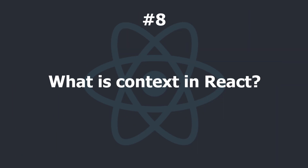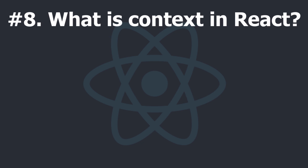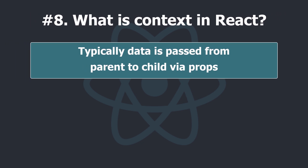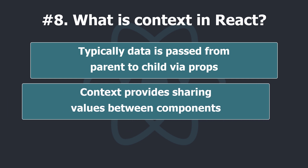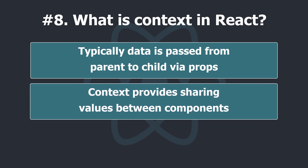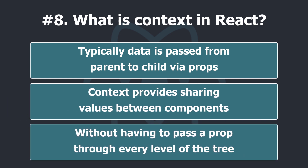What is context in React? In a typical React Native application, data is passed from parent to child via props, but such usage can be cumbersome for certain types of props — for example, locale preferences that are required by many components within an application. Context provides a way to share values like these between components without having to explicitly pass a prop through every level of the tree.